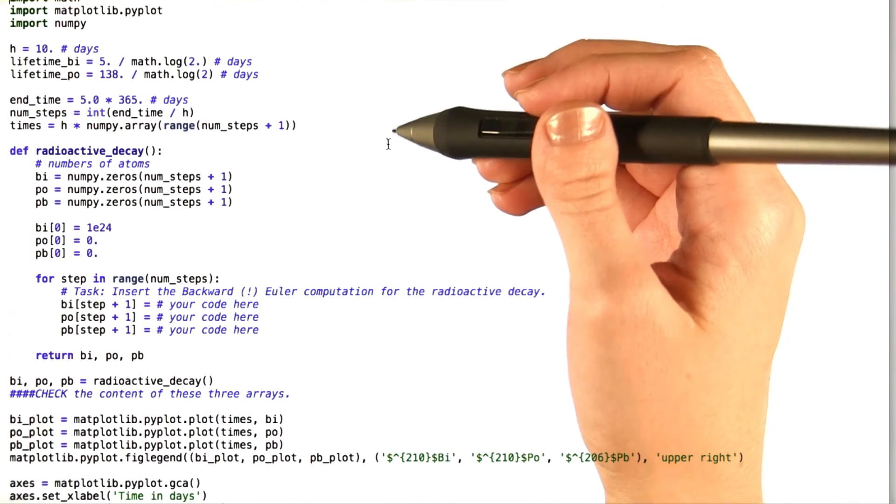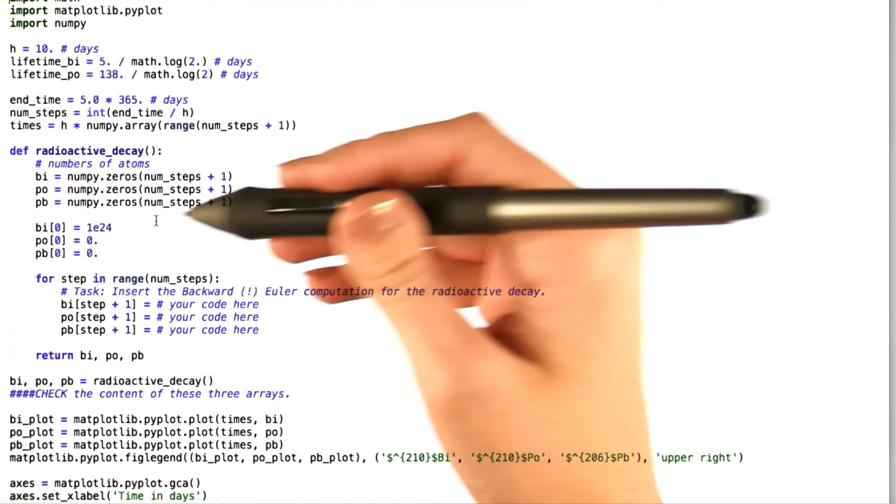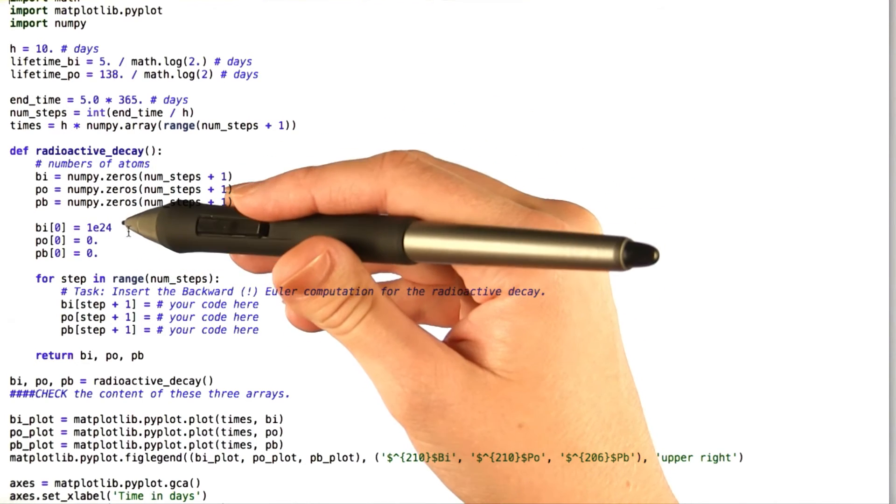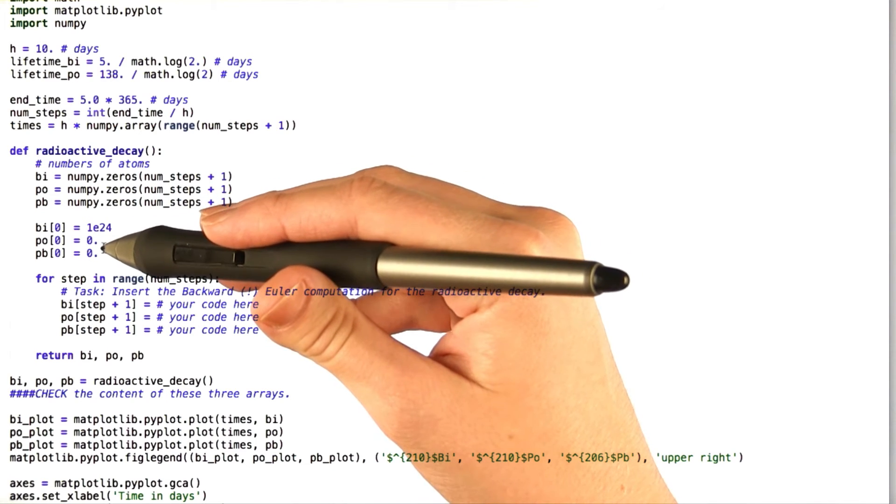Looking at the supplied code, you can see that we're actually ignoring the part of the chain that starts with uranium-238, and beginning instead with the bismuth isotope. Our initial values show that all of the atoms are bismuth at first, and none of them are polonium, and none of them are lead.